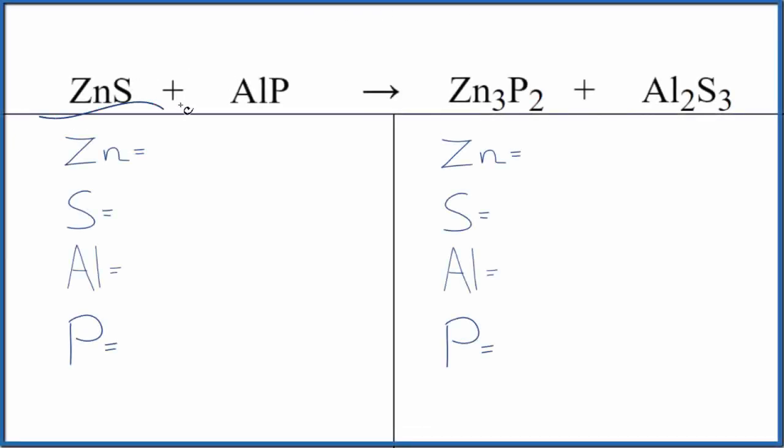Let's balance the equation for ZnS plus AlP. This is zinc sulfide, and this is aluminum phosphide. We'll also look at the type of reaction and the states.